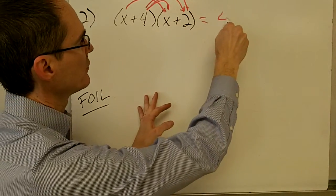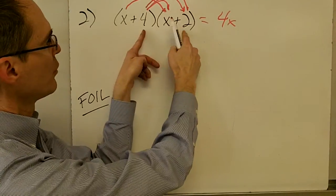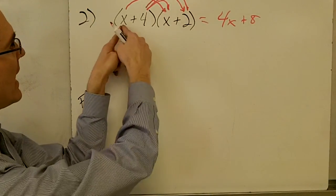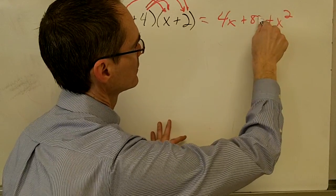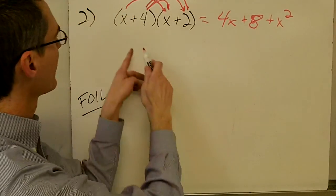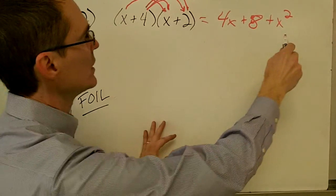4 times x is 4x. 4 times 2 is 8. x times x is x squared. And x times 2 is 2x.